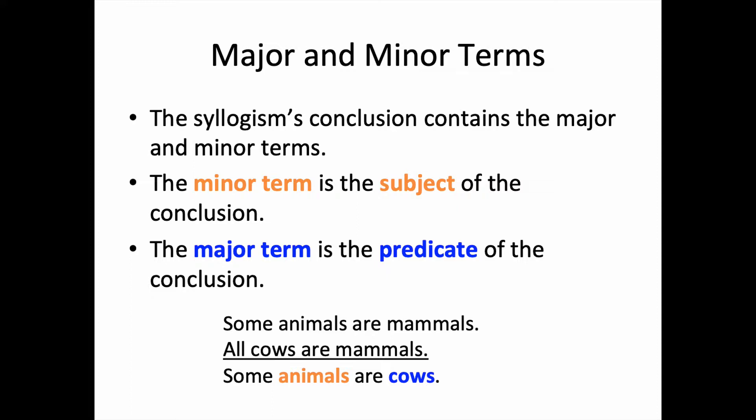Animals is the minor term. It is the subject of the conclusion. Cows is the major term. It is the predicate of the conclusion. Now that we know what the major and minor terms are and how to identify them...